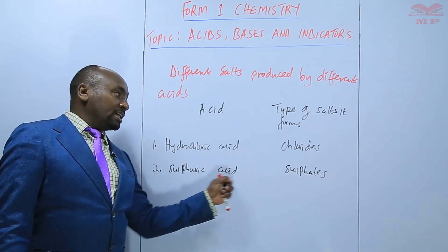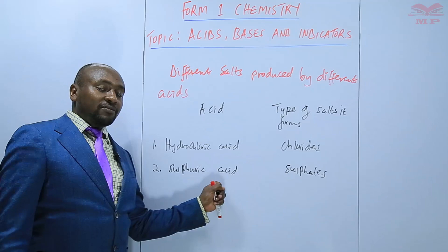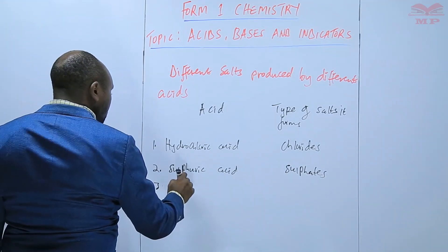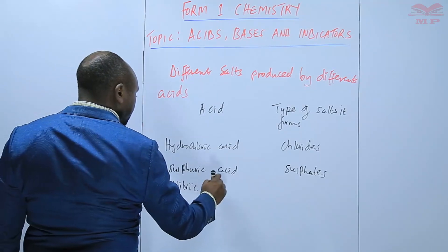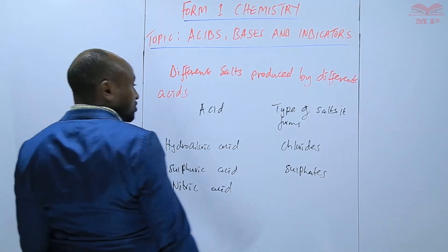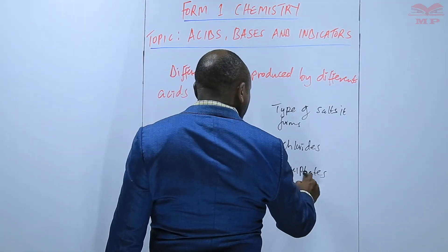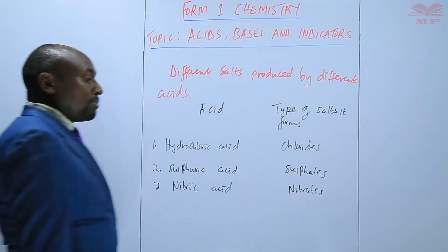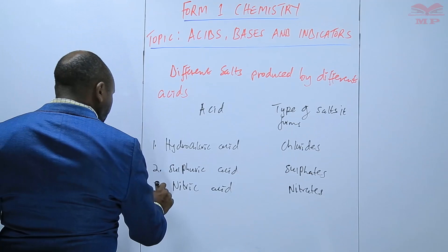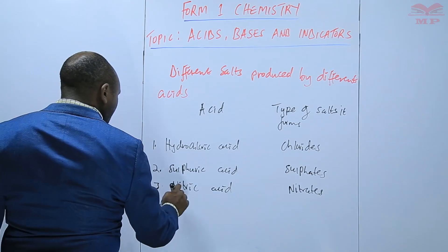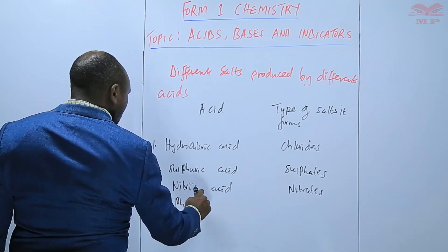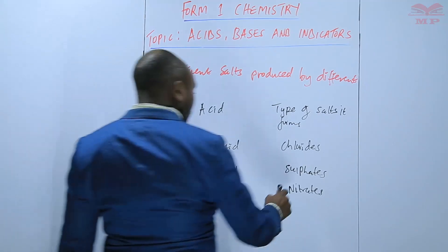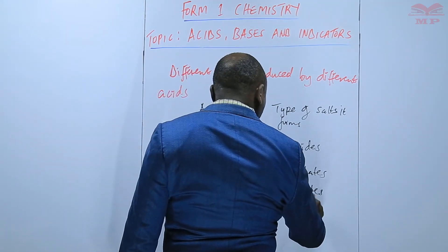From nitric acid we get salts that are called nitrates — sodium nitrate, magnesium nitrate, etc. We also have phosphoric acid, which forms salts that are called phosphates.